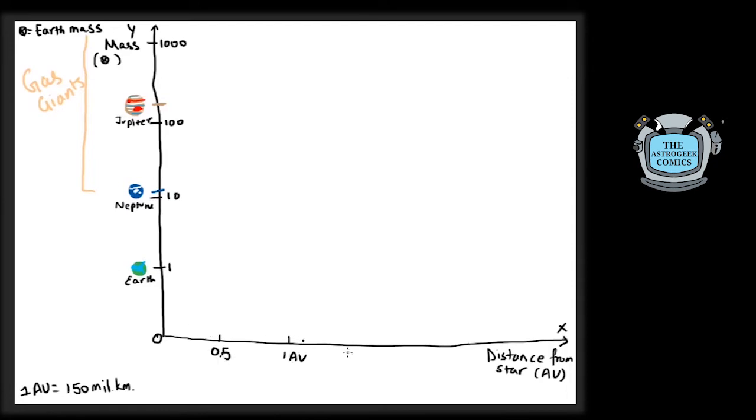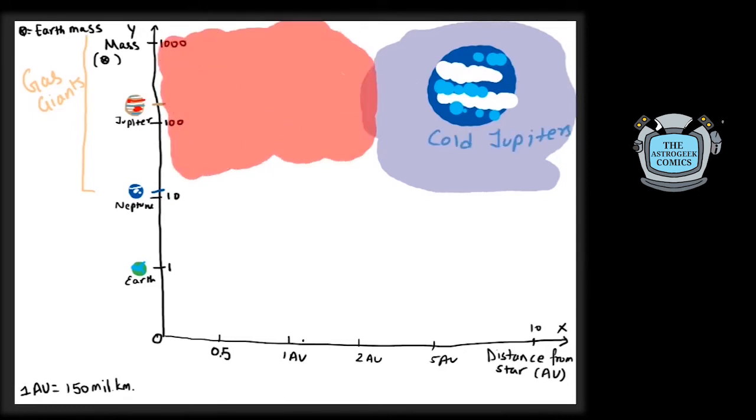If they are far away and are not tidally locked, they are called cold Jupiters or cold gas giants. If these planets lie closer to the star, they are called hot Jupiters and hot gas giants.